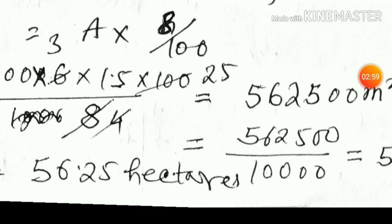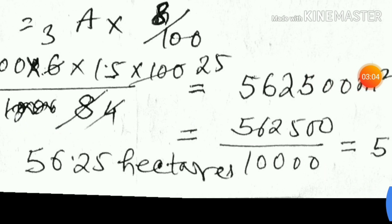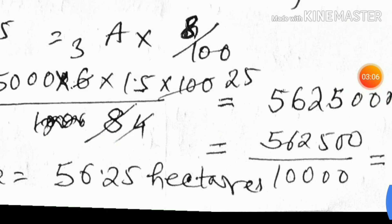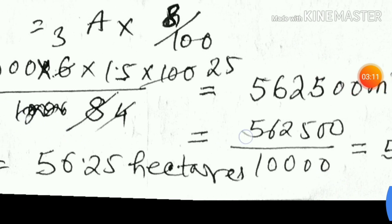Now five thousand into one point five into twenty five, that will be five six two five zero zero.